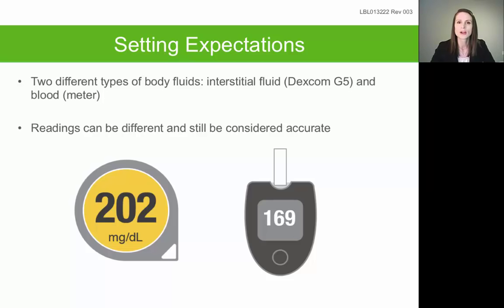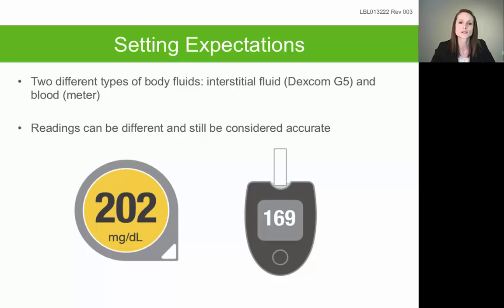Sometimes they will be the exact same number, but more often than not they will be close or similar. If you check a finger stick value and you get a value that is 80 or less, your Dexcom should read within 20 points. But if you check a finger stick value that's over 80, your Dexcom should read within 20%. For example, if you check a finger stick and get a value of 90, 20% of 90 would be 18, and you should expect to see a Dexcom value within 18 points of that 90. Or if you get a value of 70, you should simply see a Dexcom reading within 20 points of that 70.